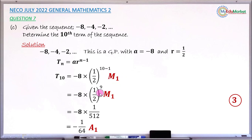The next mark is for simplifying to get the 10th term. When you have the final answer as -1/64, you get an accuracy mark. In total, question 7c has 3 marks.